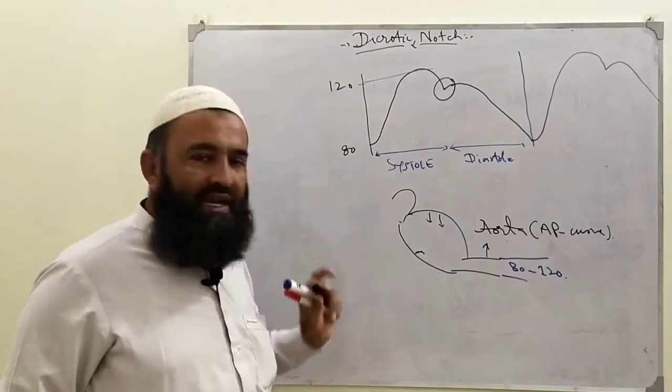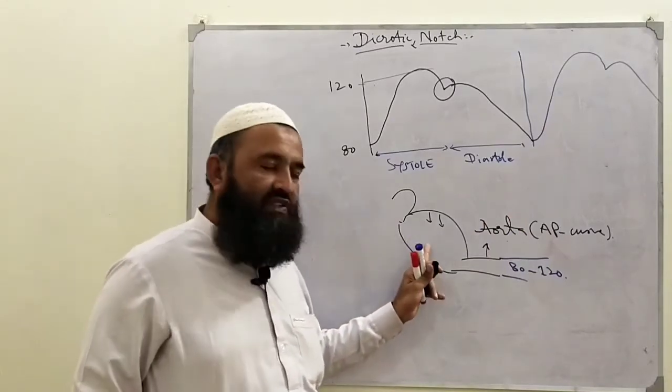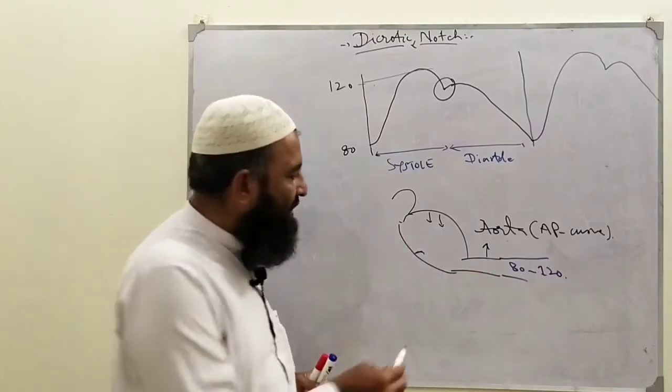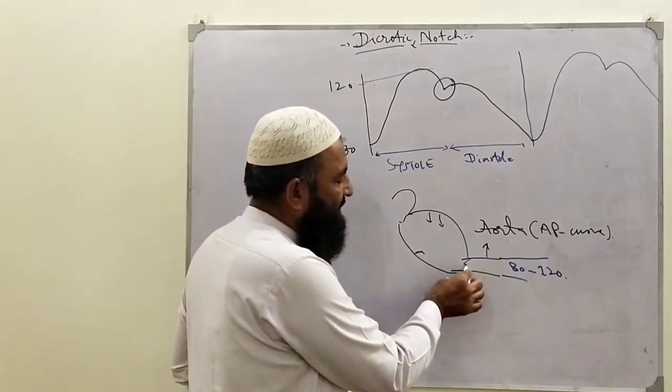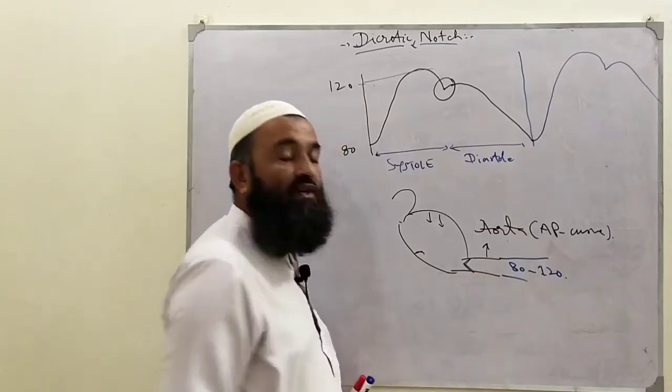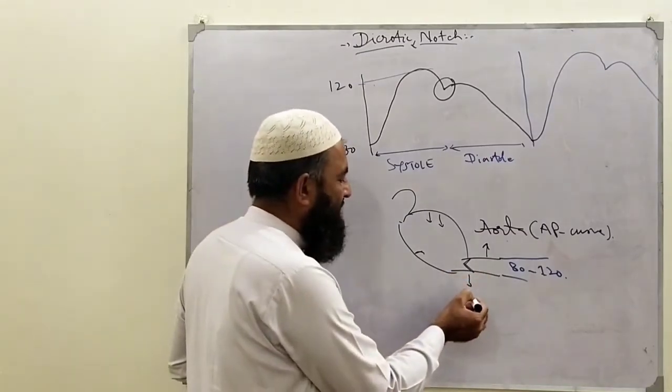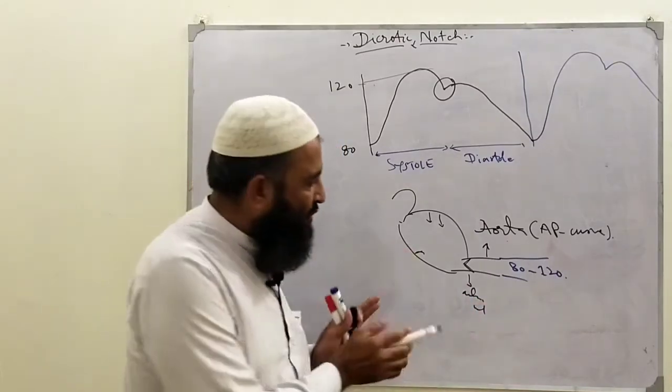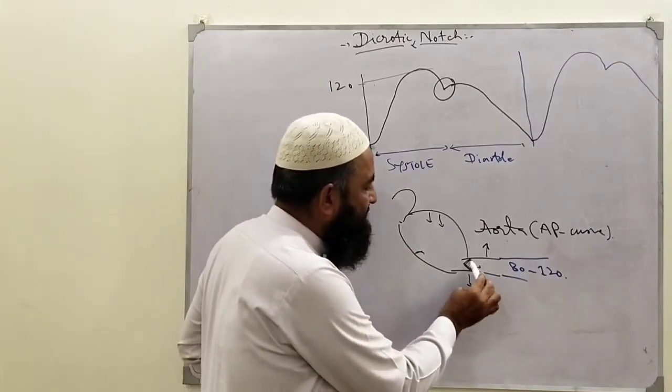Now a level comes when there is no further movement of blood from the left ventricle into the aorta. There will be closure of the aortic valve. What will happen? The aortic valve closes. When it closes, the valve cusp...